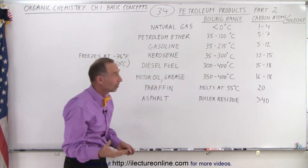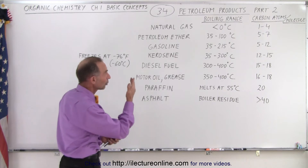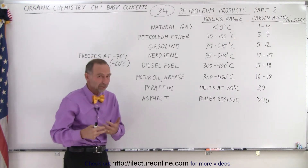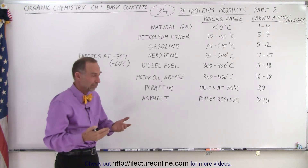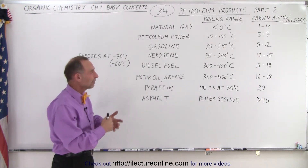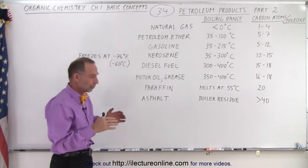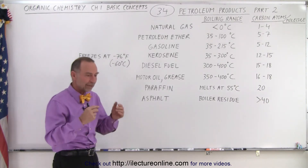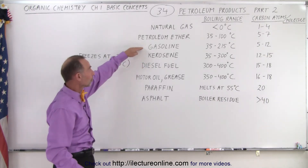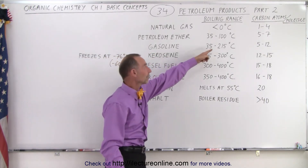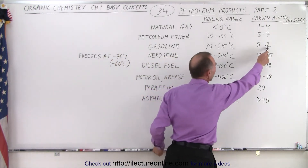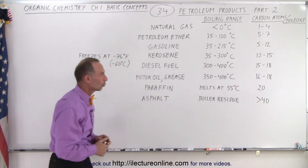For five-carbon chains like pentane, petroleum ether will begin to boil at 35 degrees Celsius — that's about 90 to 95 degrees Fahrenheit — so at very high temperatures, some compounds of gasoline will begin to boil. Notice gasoline also starts at 35 but goes up to a higher range because gasoline contains some of the larger carbon molecules as well.